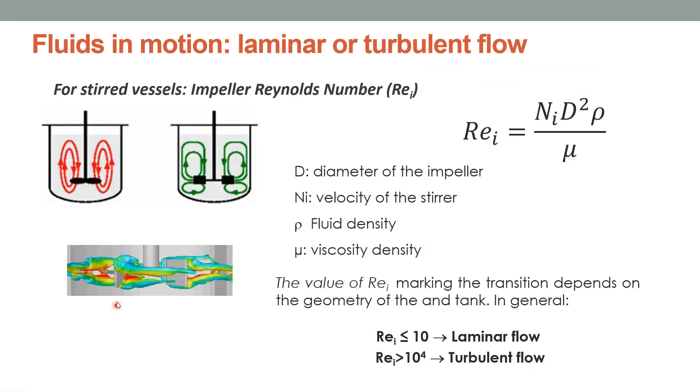Fluids can also be found inside tanks in which they are stirred. In these cases, to know if the flow is laminar or turbulent, we'll use the Reynolds number of the impeller with this subscript i and with this formula. Now, n_i is the velocity of the stirrer and the flow will be laminar when this value is lower than 10 or turbulent when the Reynolds number of the impeller is higher than 10,000.